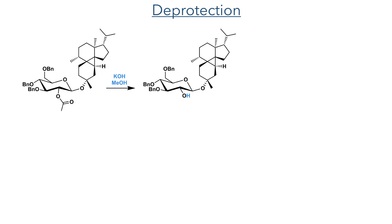Having served its purpose to direct the stereochemistry of the glycosylation, this acetate was then hydrolyzed using potassium hydroxide and methanol. These conditions selectively reveal the hydroxyl group at the 2 position, as esters and benzyl ethers are orthogonal protecting groups. This means that they can be selectively deprotected in the presence of one another, allowing control over the regioselectivity of the synthesis. This concept is very important in carbohydrate chemistry, where protecting group manipulations are carefully orchestrated to allow for the sequential and precise manipulation of different hydroxyl groups present within the sugar.